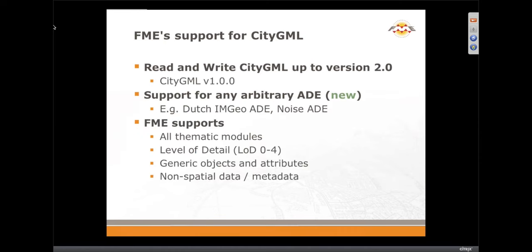In terms of our support for CityGML, we support right up to 2.0, which came out as recently as April of last year. One gotcha: if you have data created with version 1.1, since 1.1 became 2.0, that could cause trouble — you can use a type coercer to change the namespace information. We do support ADEs both in terms of reading and writing. This is kind of unique for CityGML support: for other GML profiles, you typically have to use a template to write to that custom application schema, but in the case of CityGML you just point at the ADE XSD and you can write to that ADE.